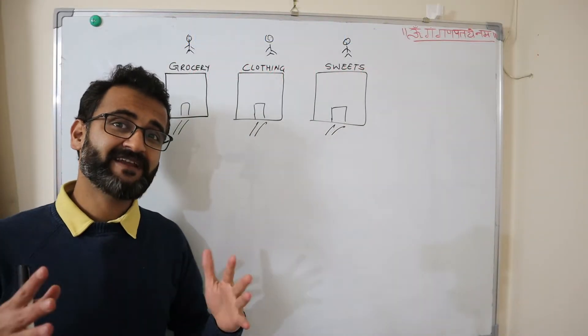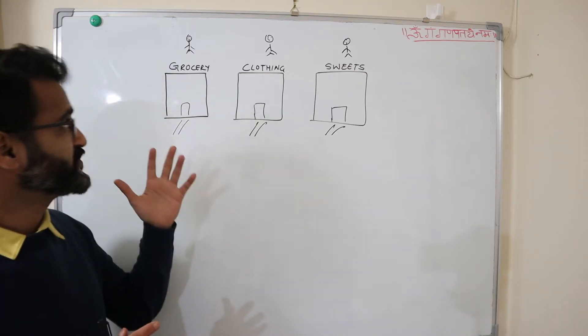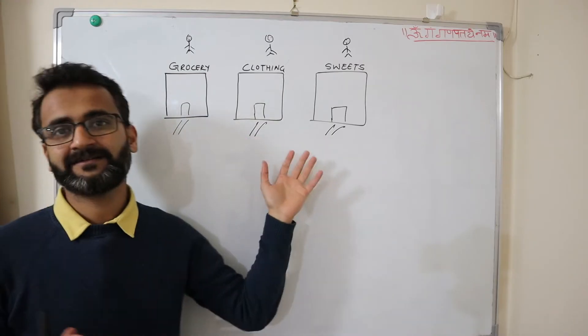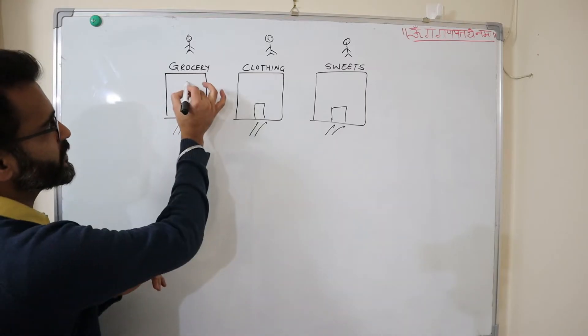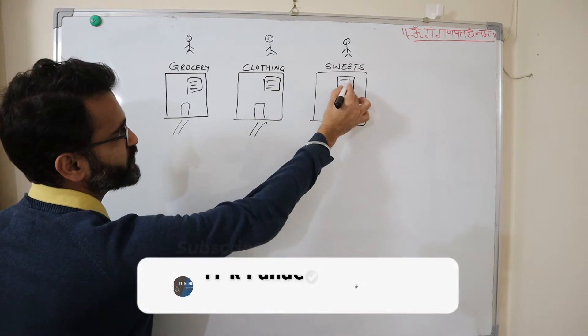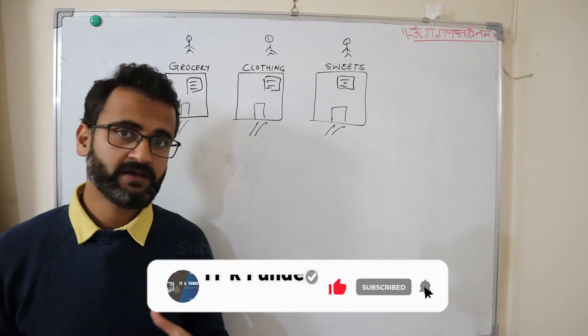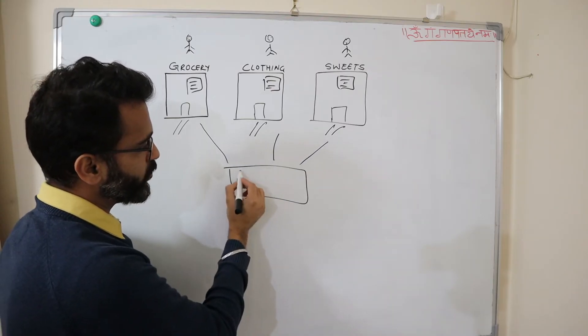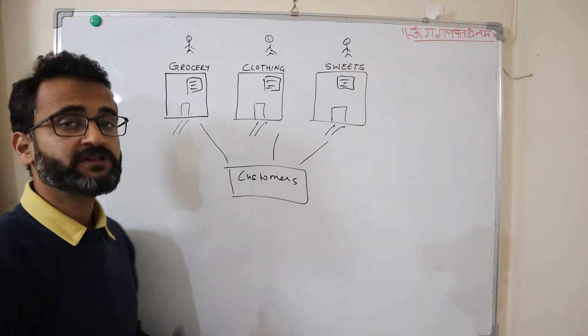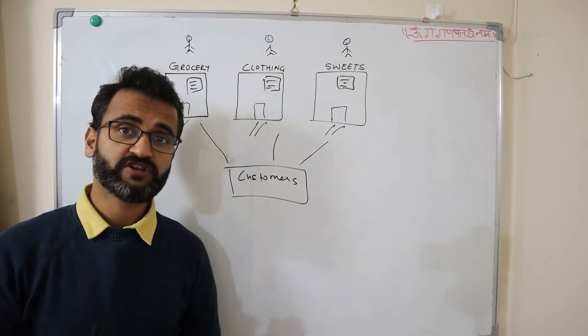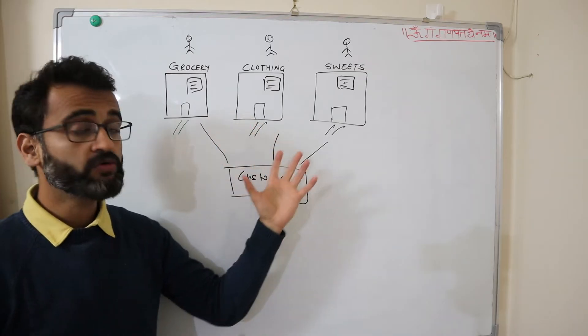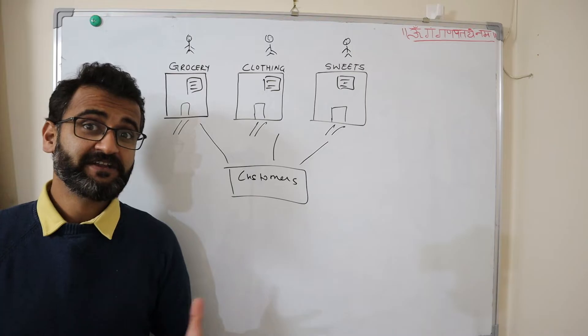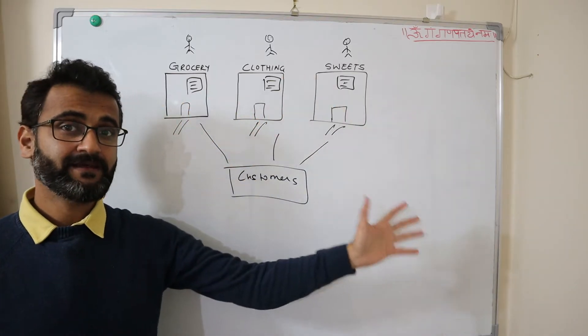In a small village, three brothers ran a family business wherein these three brothers owned individual shops of grocery, clothing and sweets. Customers from across the village used to go to these different shops to buy items, and they had their individual registers to maintain which they used to maintain individually within their shops. At the end of the month, all three brothers used to sit together and analyze what customers are the regular customers of all three shops.